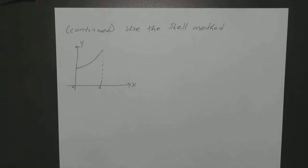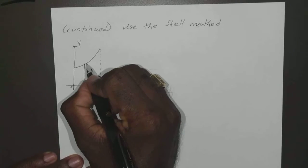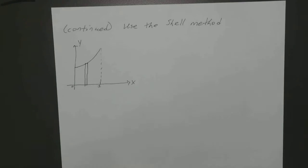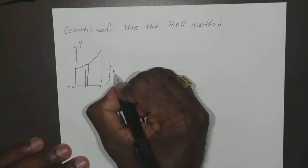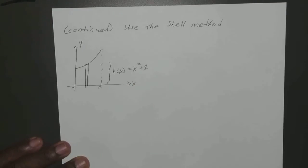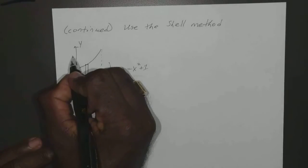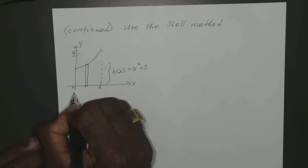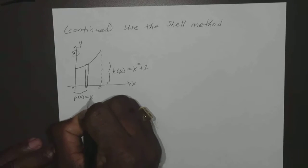Okay, now since we're revolving around the y-axis, we're going to make our rectangle parallel to that y-axis. So you can just kind of draw a rectangle anywhere. It doesn't have to be anything perfect, just a visual aid. Okay, so we know that our h of x, which is just the height of the rectangle, equals x squared plus 1. And our p of x, remember the distance from the axis of revolution to the center of your rectangle, your p of x is equal to x.